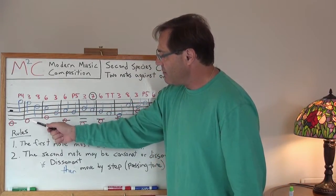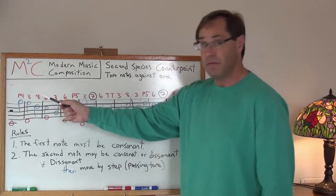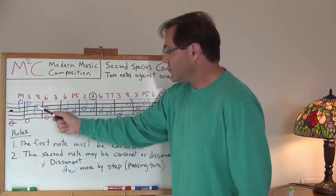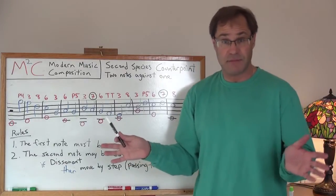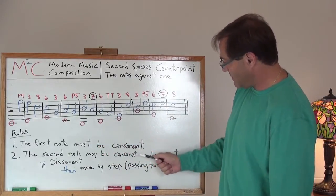But now in my Cantus firmus, I've got a D. A D to an F is a third. I've decided I'll take it, that F down to a D and then just make an octave. I can do that. That's a perfect consonance. And according to my rules, the second note can be consonant.